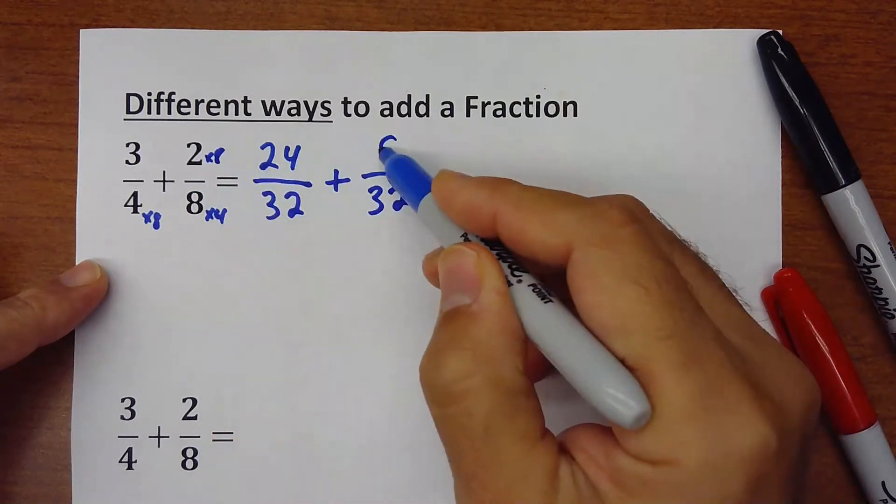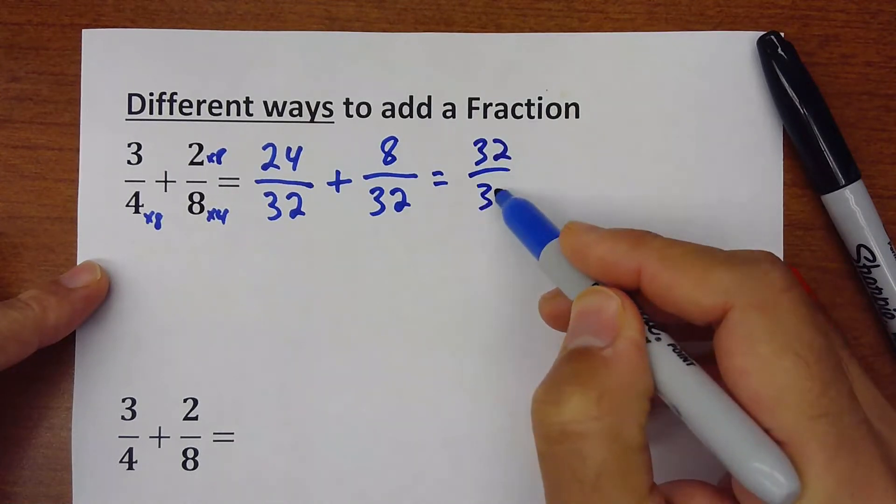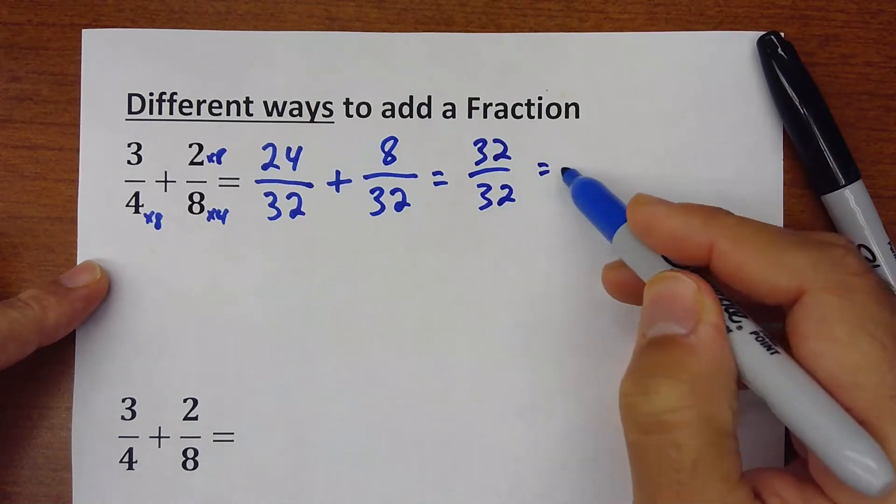And then 2 times 4 is 8, and that would be at the end equals 32 divided by 32, and that would be equals 1.